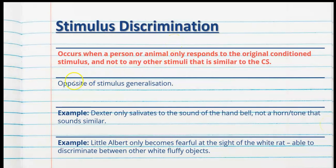Stimulus discrimination is the opposite of generalisation. This occurs when a person or animal only responds to the original conditioned stimulus and not to any other similar stimuli. If Dexter only salivated to the sound of the original hand bell and nothing else similar, he has discriminated between stimuli. If Little Albert only became fearful at the sight of the white rat and not the dog or bunny rabbit, he was able to discriminate. This only occurs when the original conditioned stimulus causes the response and nothing similar to it.